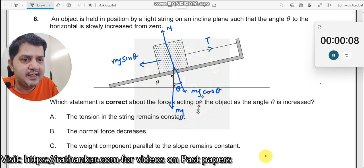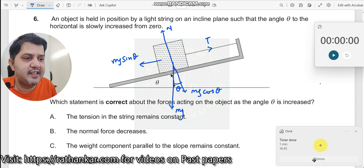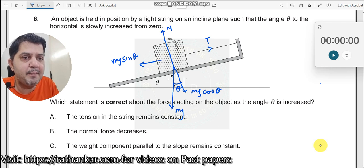When the value of theta is increasing, then definitely mg sin theta will also increase. When mg sine theta increases, T should also increase. Why should T increase? Because the body needs to be balanced, it is in equilibrium. So as a result, T should be equal to mg sine theta. When this increases, this will also increase.